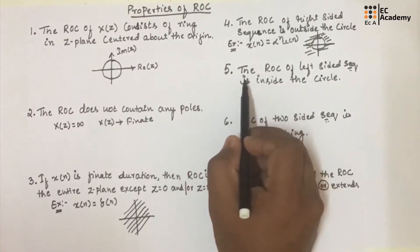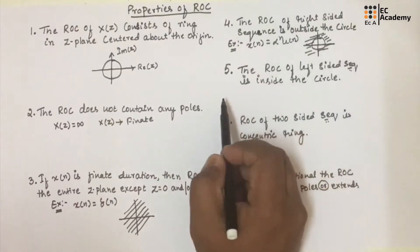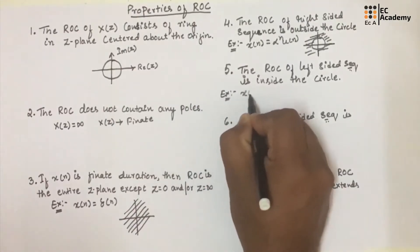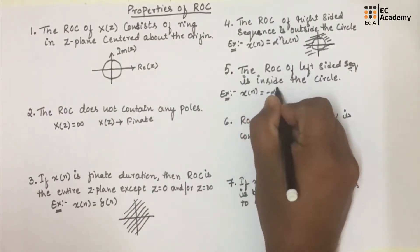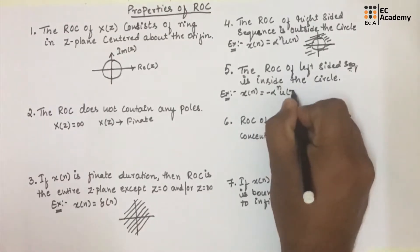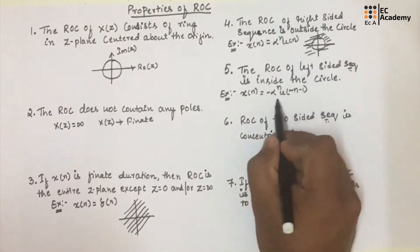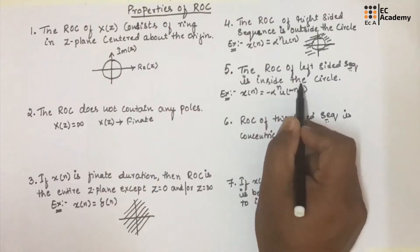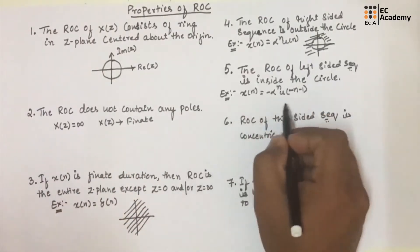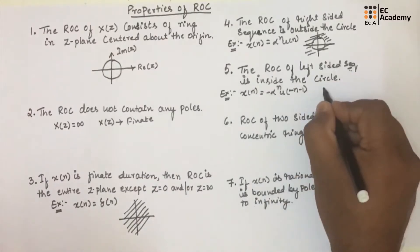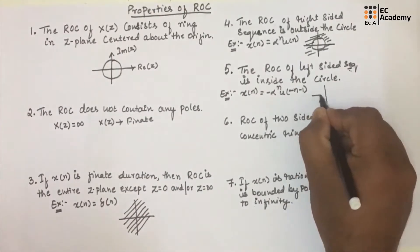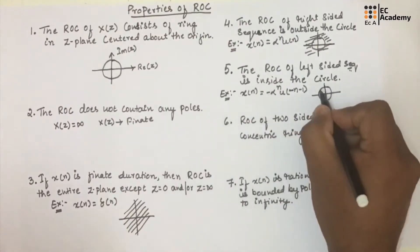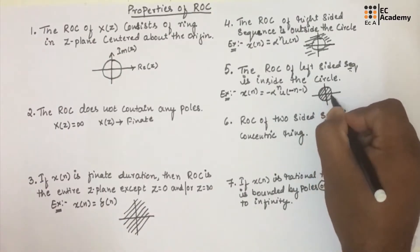The next property is the ROC of a left-sided sequence is inside the circle. For example, if we take X(n) equal to minus alpha to the power of n times U(minus n minus 1), this sequence is a left-sided sequence, indicated by U(minus n minus 1). For this type of sequence, the ROC will be inside the circle.